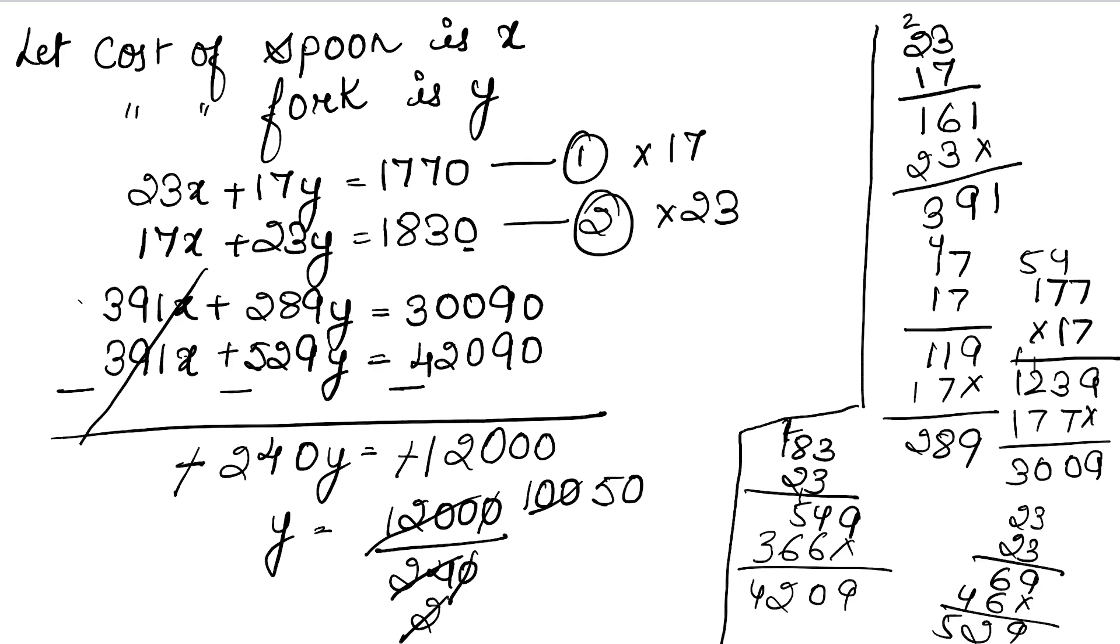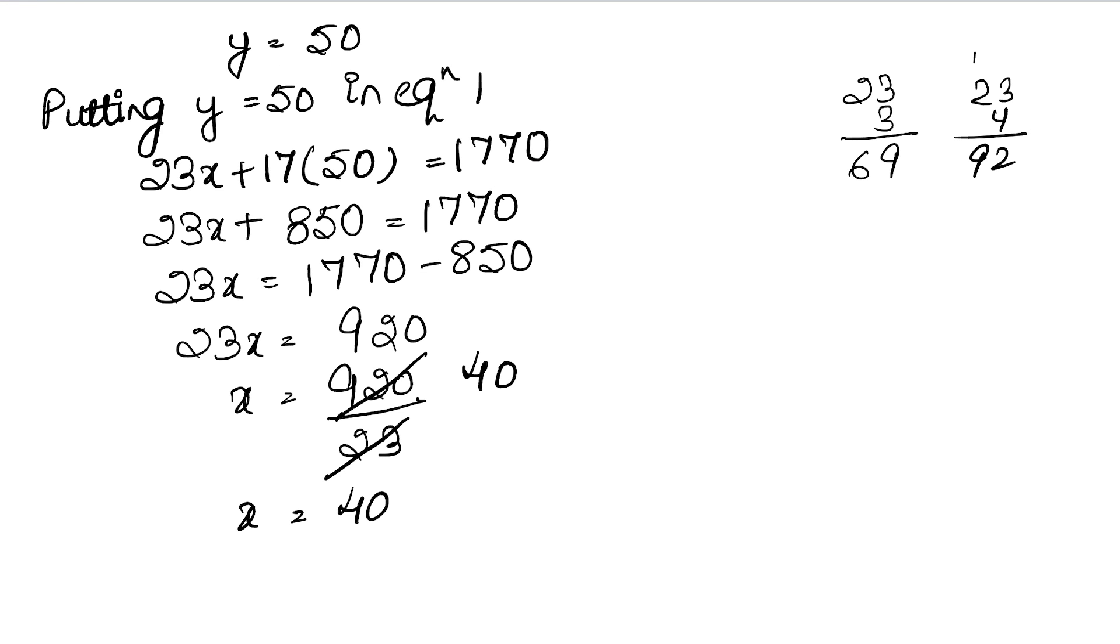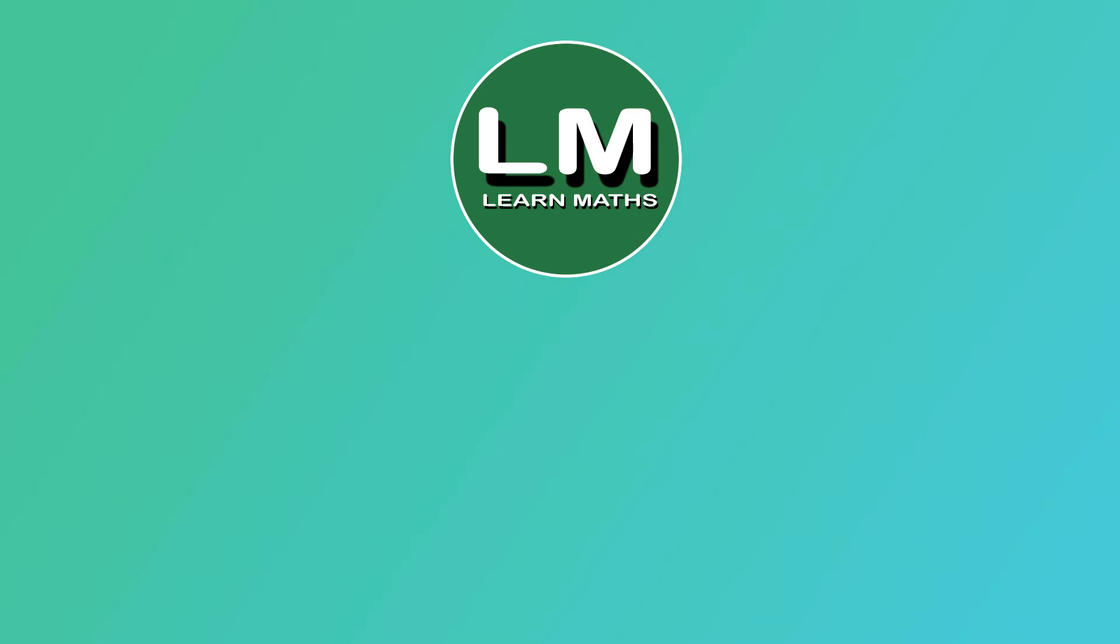Now we have to find x. x is the cost of spoon. So cost of spoon is rupees 40. And cost of one fork, y, is rupees 50. This is the answer.